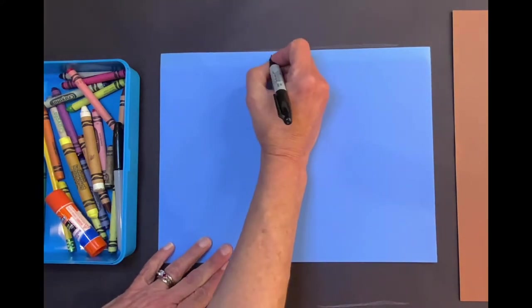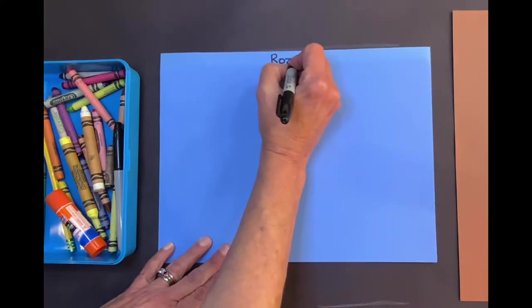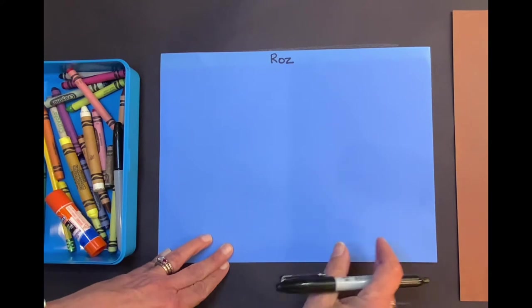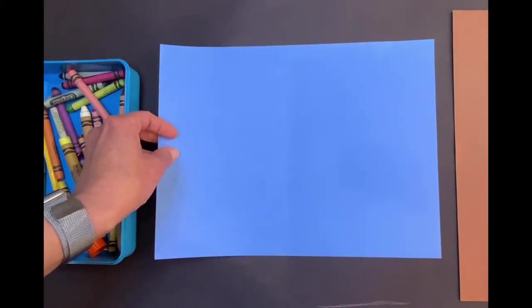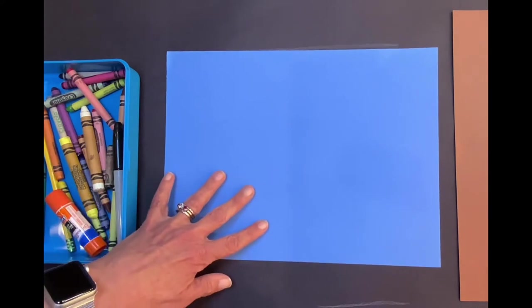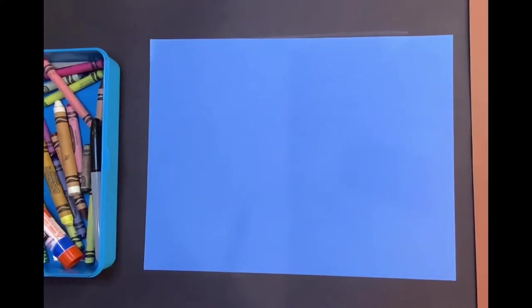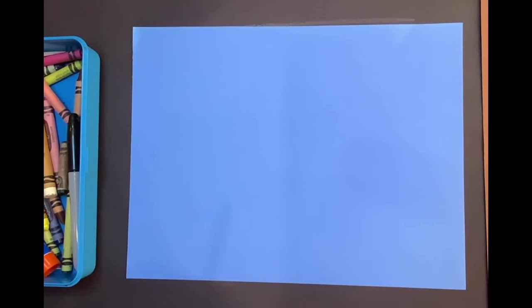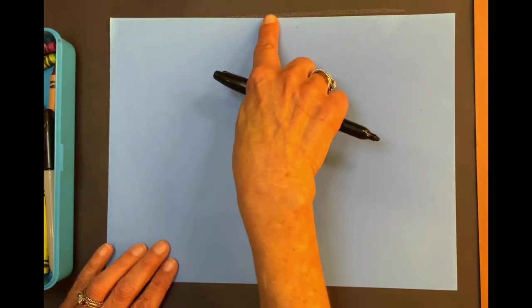I'm going to write my name at the top. Can you write your name at the top? Great. Now let's turn it over onto the other side. I have my paper like a landscape. That means it's wide so I can draw a lot of things. Here's the top of my page.